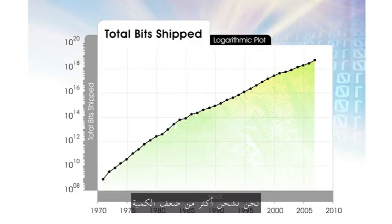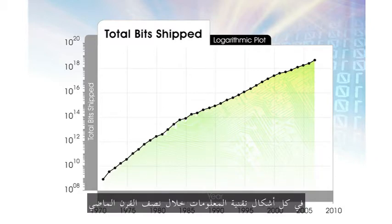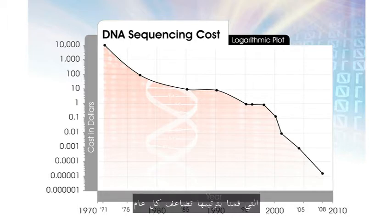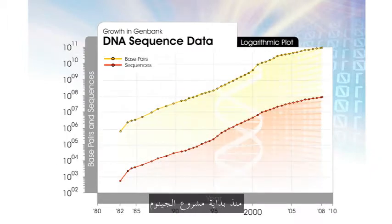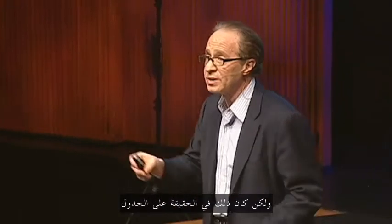But we more than make up for that — we actually ship more than twice as much of every form of information technology. We've had 18% growth in constant dollars in every form of information technology for the last half century, despite the fact that you can get twice as much of it each year. This is a completely different example — not Moore's Law. The amount of DNA data we've sequenced has doubled every year; the cost has come down by half every year. Halfway through the Genome Project, skeptics said you've finished only 1% of the project. But if you double 1% seven more times — which is exactly what happened — you get 100%, and the project was finished on time.